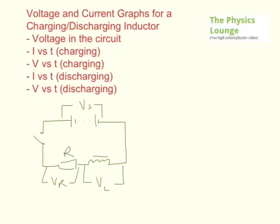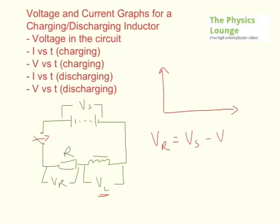Now, let me close the switch. Initially you have a high rate of change of flux, or rate of change of current, so that's when your induced voltage in the inductor is going to be maximum. It's important to remember that that voltage is opposing the supply — the voltage across the inductor and the voltage across the supply are in opposition. The voltage across the inductor will be negative with respect to the supply voltage. So the voltage across the resistor equals the voltage across the supply minus the voltage across the inductor. And the total current times resistance equals VR, which equals VS minus VL.